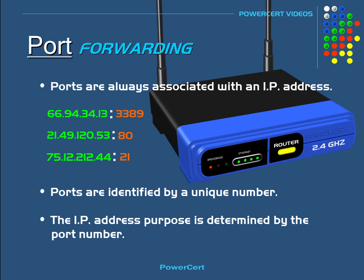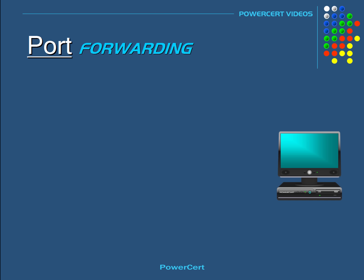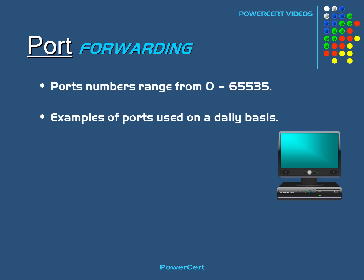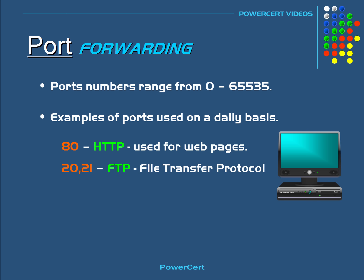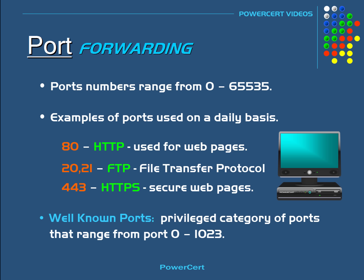Ports are not only associated with an IP address, but also always associated with an application or process such as FTP, web pages, email, and so on. Port numbers range from 0 to 65,535. Of these, a few are most commonly used on a daily basis — for example, port 80 for web pages, ports 20 and 21 for FTP (file transfer protocol), and port 443 for secure web pages. There is also a privileged category called the well-known ports, which ranges from port 0 to port 1023.